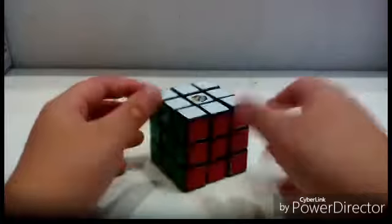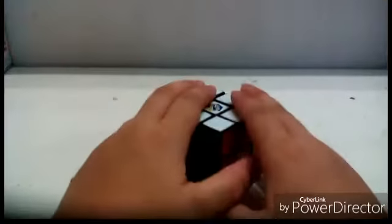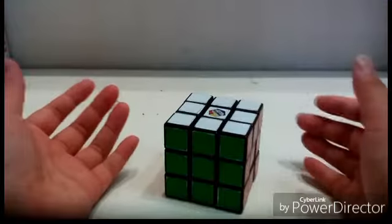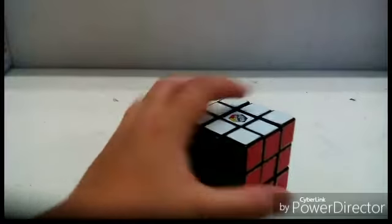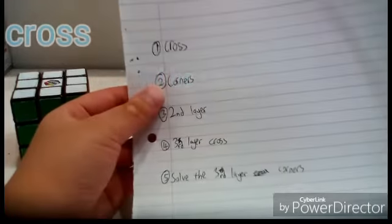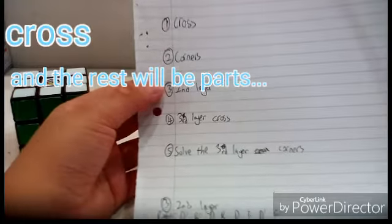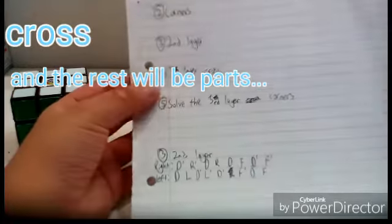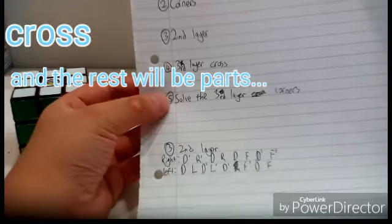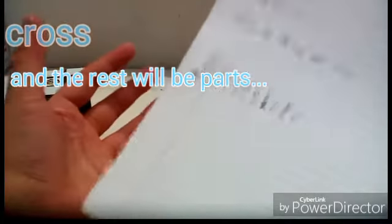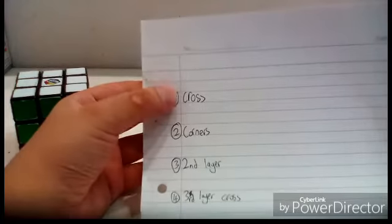The whole part of solving a 3x3 Rubik's Cube is: you need to get the cross, you need to get the corners correctly placed, you need to solve the second layer, solve the third layer cross, and solve the third layer corners — basically solve the whole cube. I'm going to do a five-part video.